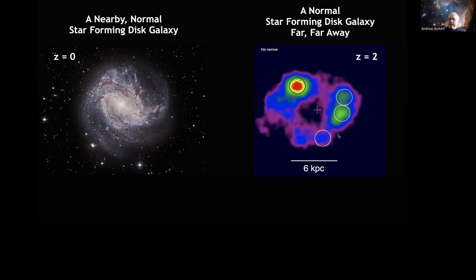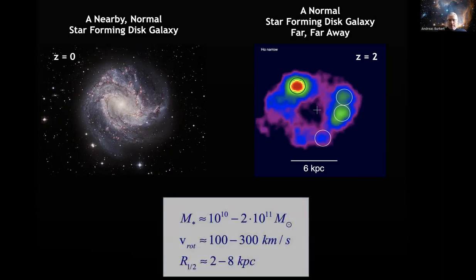You see a ring of star formation in H-alpha, tracing the star-forming gas, and you see large clumps with typical sizes of kiloparsecs. You might say maybe this is because of smoothing — a typical resolution element is a few hundred parsecs. But even if you smooth this galaxy to a few hundred parsecs, it wouldn't look like this. So the galaxies at redshift two look different from the redshift zero galaxies.